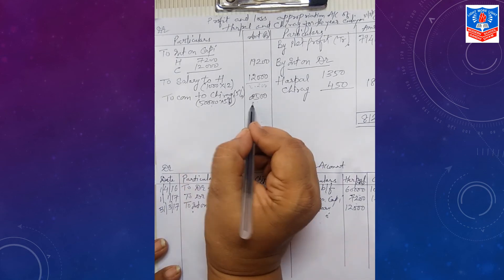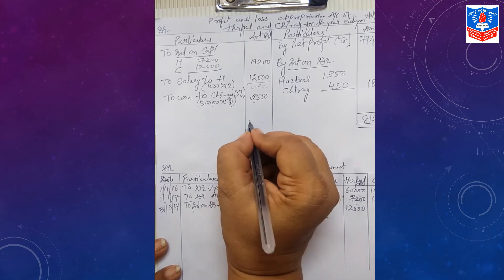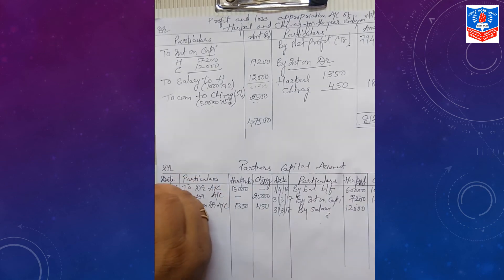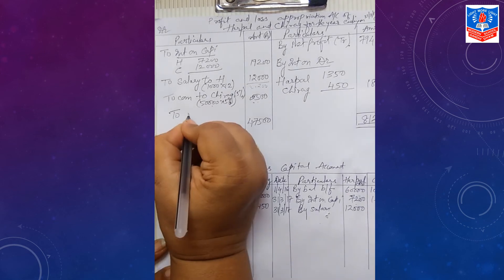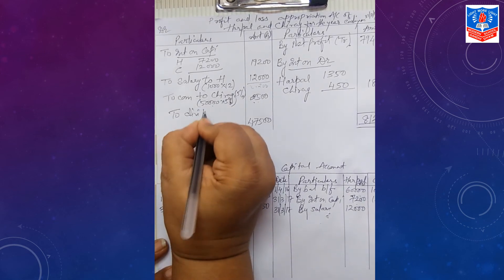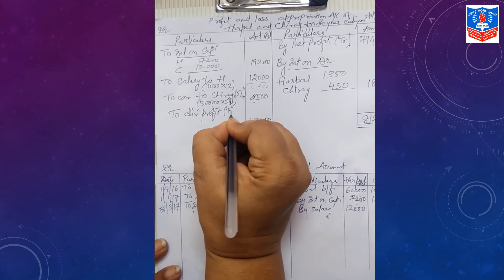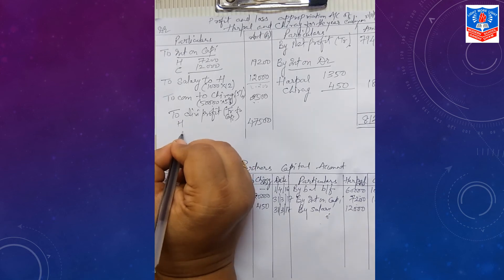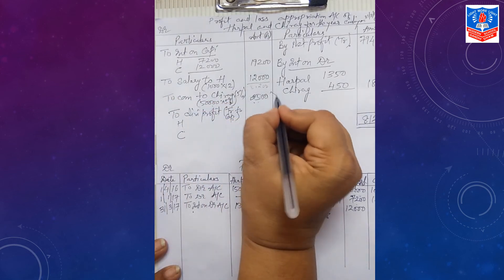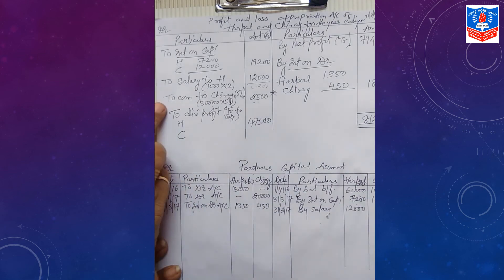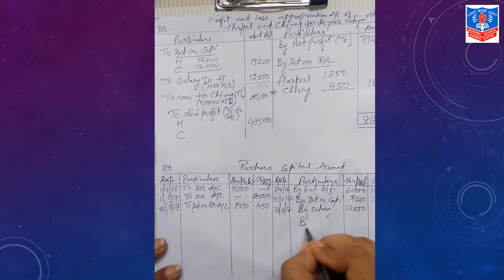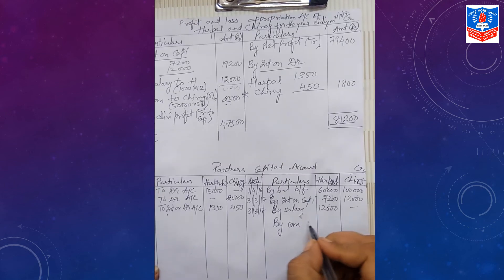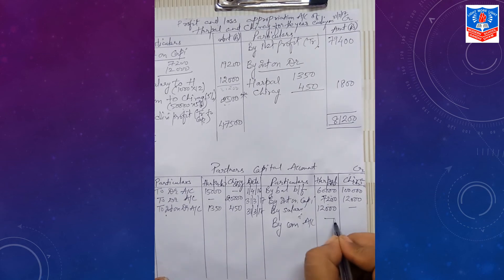Chirag, the second partner, the commission will get Rs. 2,500. Let us record it. Again, expense for firm but income for partner. Record it: to commission to Chirag, 5%. You can even write here Rs. 50,000 into 5%. I always say it is an accounting adjustment. Now from Rs. 50,000, Rs. 2,500 will be deducted. This will be transferred to capital account. One effect here, expense for firm, income for Chirag. Chirag's income, credit. By commission account in Chirag's account, Rs. 2,500.